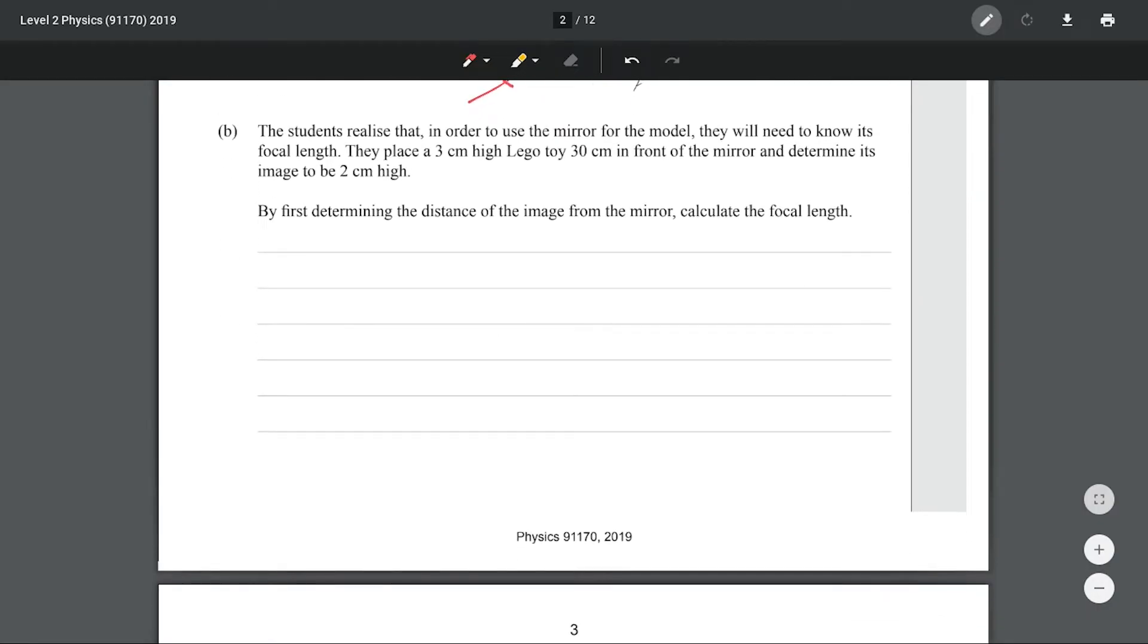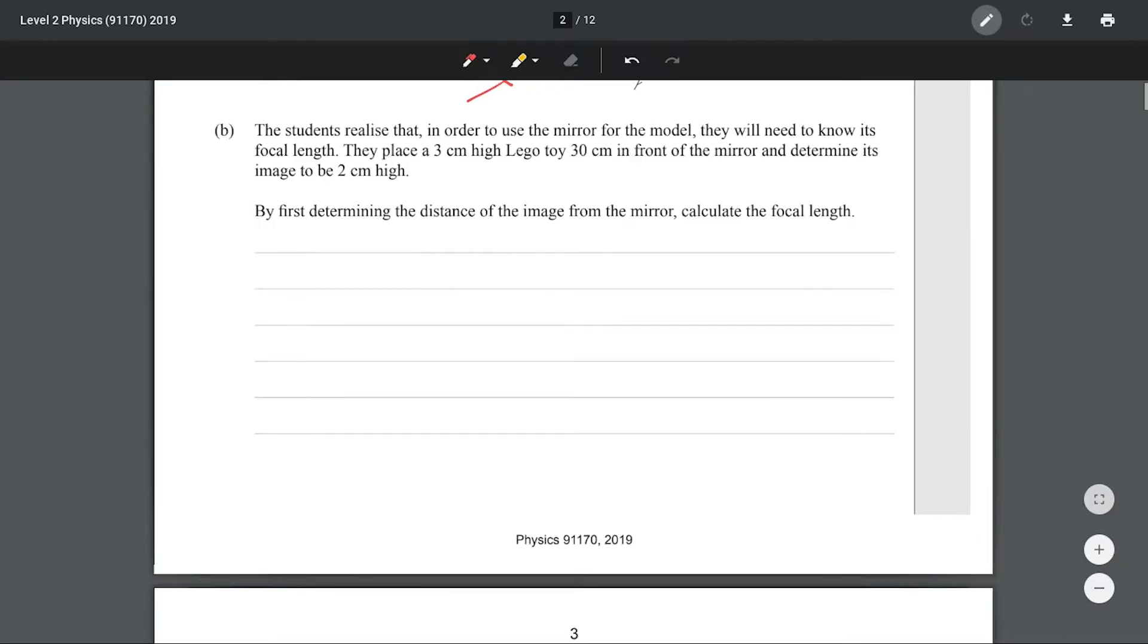The students realize that to use the mirror for the model, they need to know its focal length. They place a three centimeter high Lego toy 30 centimeters in front of the mirror and determine the image to be two centimeters high. By determining the distance of the image from the mirror, calculate the focal length. Let's write what we're given.